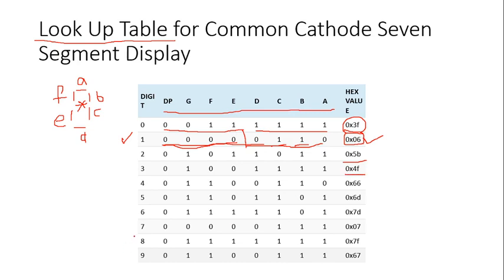For digit 8, almost all segments are on — only the dot point is not displayed. So all other bits are 1, giving the code 0x7F. In this way, I have provided the list of codes for digits 0 to 9. This forms the lookup table prepared for interfacing the common cathode 7-segment display.